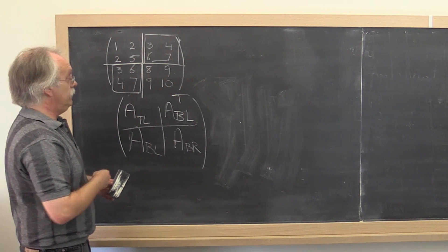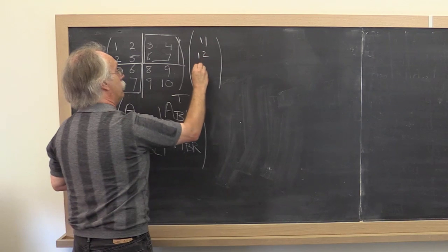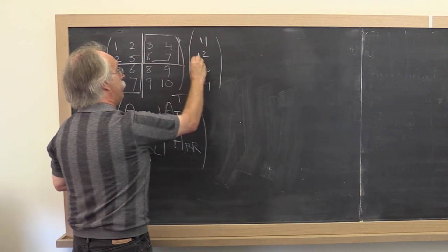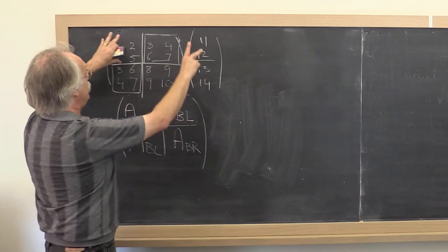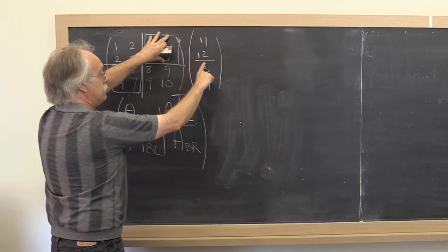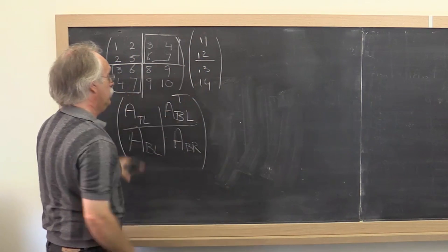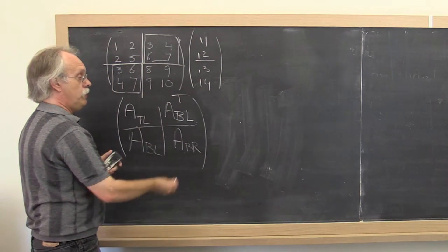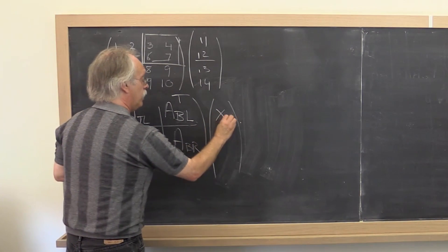Now if we multiply with a partition matrix, it's just this times that plus this times that, etc. But you can also think of it as this times that plus this times that, and this times that plus this times that.